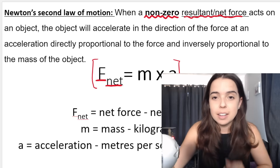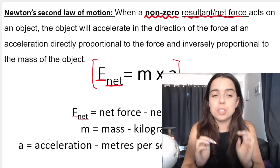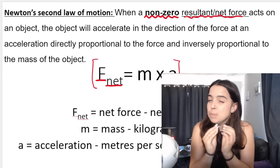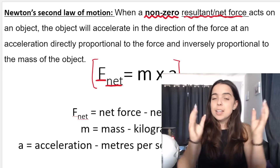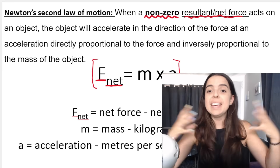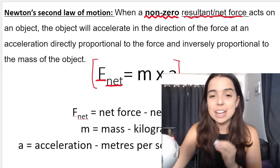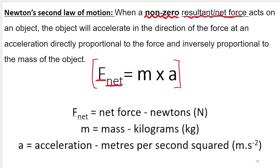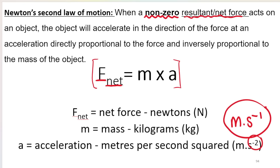Inversely proportional means that if one variable goes up, the other variable goes down. So if I have a big object and I exert a net force of 10 newtons on it, it's going to have a small acceleration — big mass, small acceleration. A small object with the same net force of 10 newtons to the right will have a big acceleration. It's also very important to know that net force is measured in newtons, mass must be measured in kilograms, and acceleration in meters per second squared.